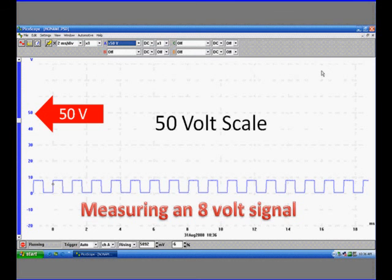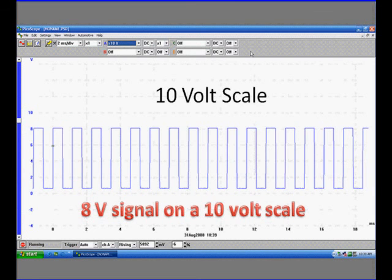We start off on a 50 volt scale and we're measuring an 8 volt signal. Actually, that does no harm. It just makes the signal a little bit small. It's actually very useful. It would probably be better off if we put it on a 10 volt scale. We can see that it is 8 volts.